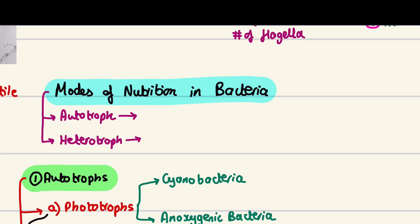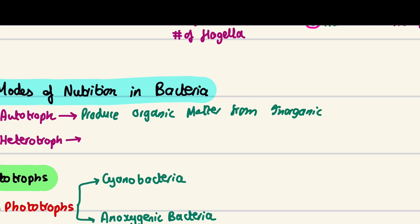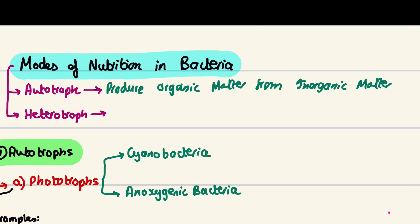Talking about bacteria, we have two different modes of nutrition. The first definition is autotroph — produce organic matter from inorganic matter, meaning they produce their own food. The second is heterotroph, which is essentially using prepared organic matter.